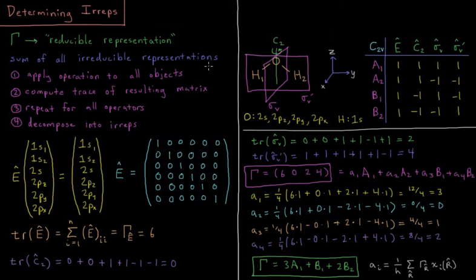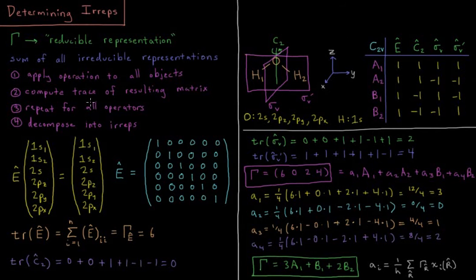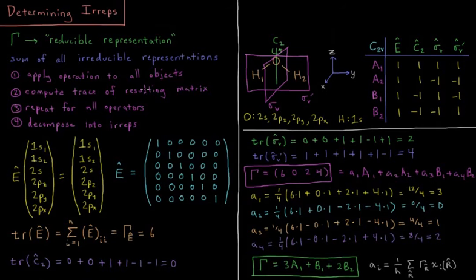In order to do that, I'm going to apply all of the symmetry operations in our point group to all six of those objects. Then I'm going to compute the trace of the resulting matrix, which represents those operators in this representation of these six orbitals. We'll do that for all of the operators, and then use a reduction formula to decompose that into irreducible representations.